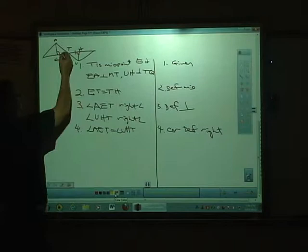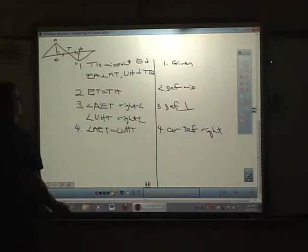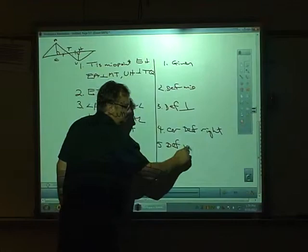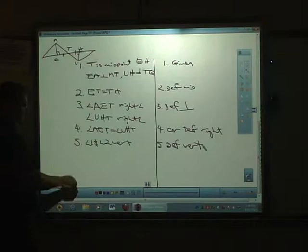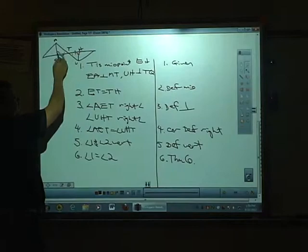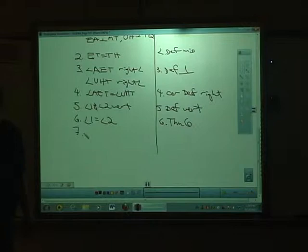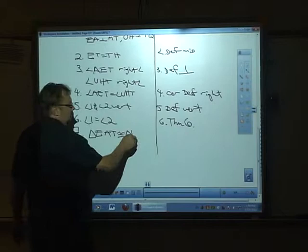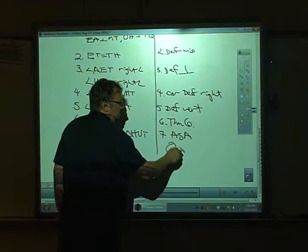If they're right, then we know they must be equal. Angle AET equals angle UHT by corollary to the definition of right, which says all right angles are equal. If you want to say they're 90 degrees and then they're equal by substitution, that's fine, but you don't need to. Now, what else do we know? Let's label the angles at the intersection 1 and 2 — they're vertical. So angle 1 and angle 2 are vertical by definition of vertical, and if they're vertical, they are equal by Theorem 6.